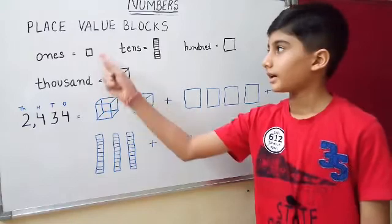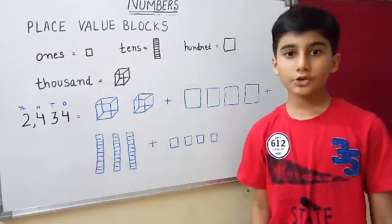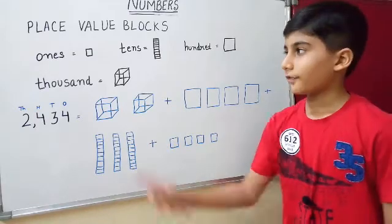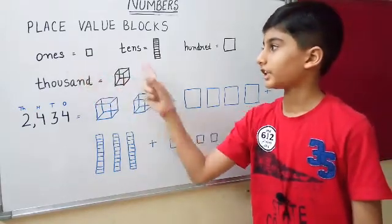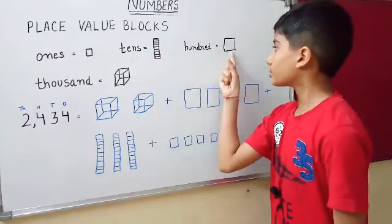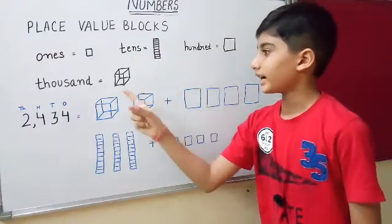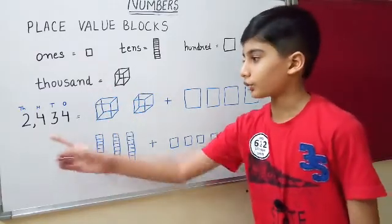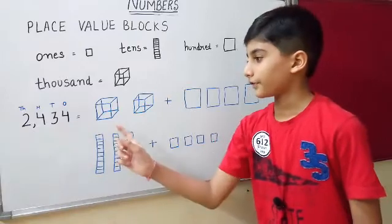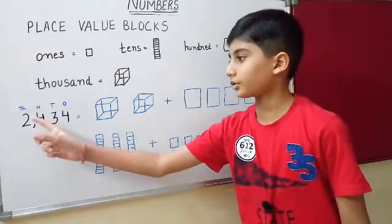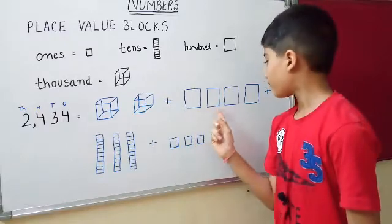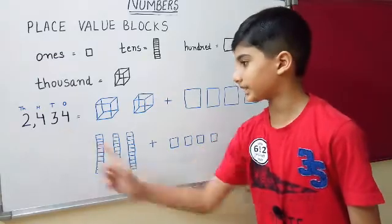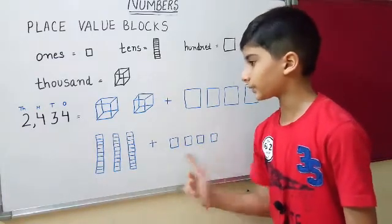Another way to write a number is with place value blocks. You need to remember the symbols for the place value of each digit. We use a unit for the ones place, a rod for the tens place, a flat for the hundreds place, and a cube for the thousands place. For example, the number 2,434: draw two cubes for two thousand, four flats for four hundred, three rods for three tens, and four units for four ones.